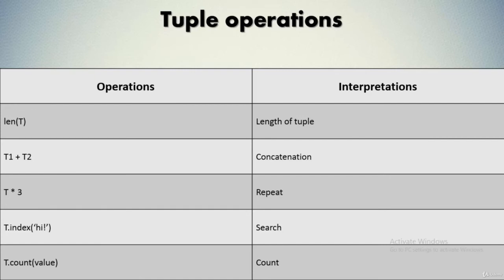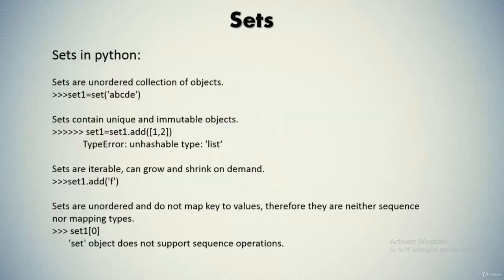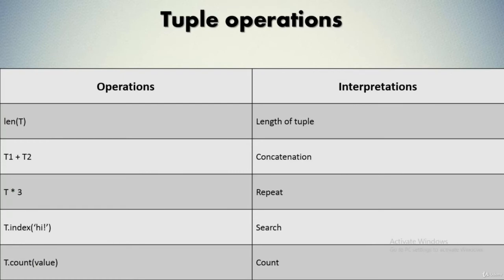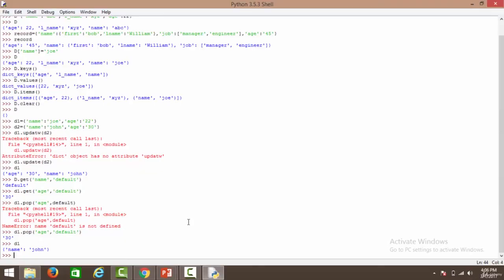Tuples are fixed length, heterogeneous, and arbitrarily nestable. The operations available include: length (finds the length of the tuple), concatenation (using the addition operator to combine two tuples), repeat (multiplying a tuple by a number to repeat it), index (finds the index of a particular element), and count (finds how many times a particular value has occurred in a tuple).